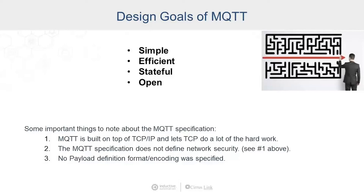MQTT also doesn't define network security in its specification. We're relying on the latest TCP/IP security technologies to do all of the work for defining network security. And lastly, no payload definition — no formatting or encoding was specified. This was on purpose because, looking at legacy protocols like Allen Bradley and Modbus, hard-coded function codes to data types were hard to expand going forward.